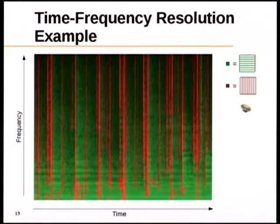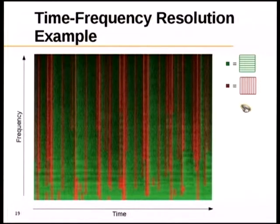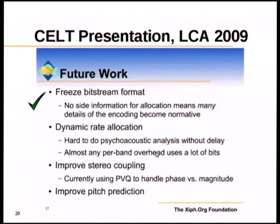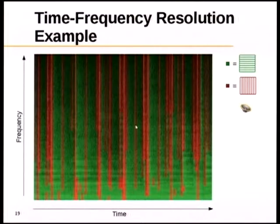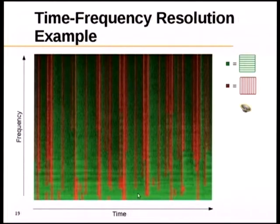An actual encoder example shows guitar playing simultaneously with hand claps. Most of the spectrum is green, indicating good frequency resolution. When hand claps occur, red appears indicating time-domain mode, but it does not necessarily extend all the way down in frequency — so tones can still be properly encoded even during the hand claps.